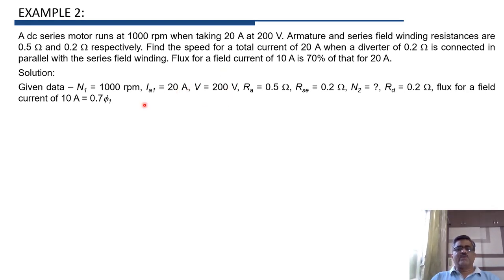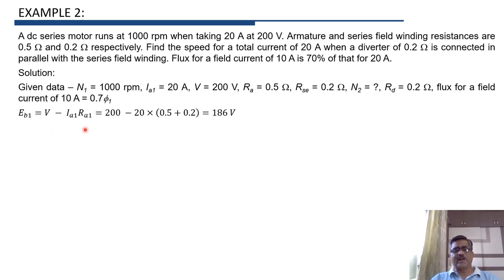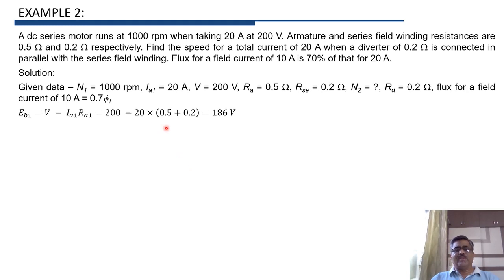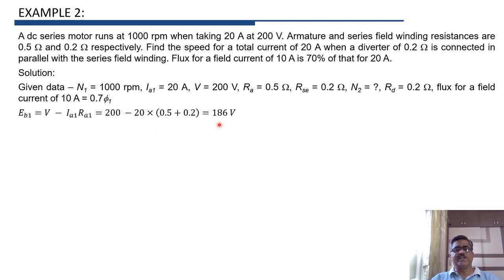First, we calculate the back EMF in the first case. Eb1 equals V minus Ia1 into Ra1. Here Ra1 is armature resistance plus series field winding resistance without the diverter, so 0.5 plus 0.2. Therefore Eb1 equals 200 minus 20 into 0.7, which gives Eb1 equals 186 volt.